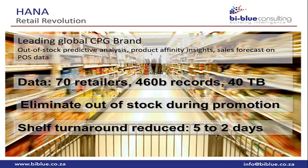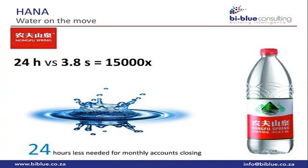Let's look at real-world benefits. A leading global CPG brand with 70 retailers had 460 billion records — 120 terabytes of data. In HANA, that came down to 40 terabytes, a massive storage saving. They reduced their shelf turnaround from five to two days. Another company reduced report generation from 24 hours to 3.8 seconds. They also have seven production sites across several factories, and HANA enabled real-time analysis across all locations simultaneously.